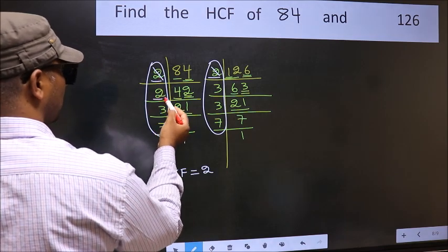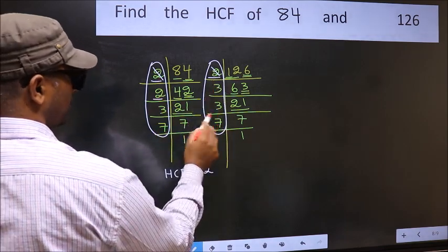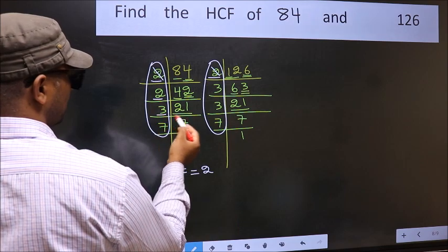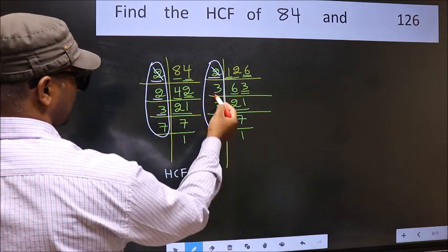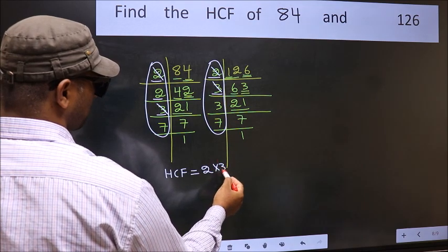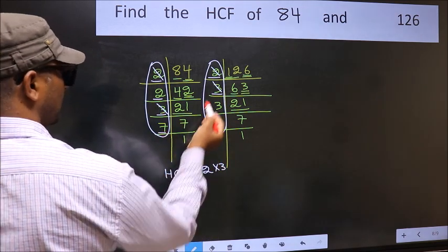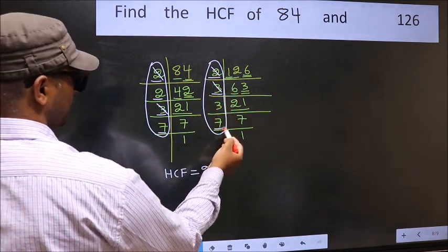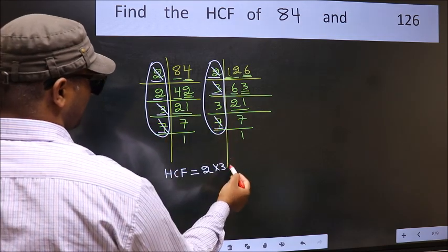So cut 2 right here. Next number 2. Do we have 2 here? No. Next number 3. Do we have 3 here? Yes. So cut 3 right here. Next number 7. Do we have 7 here? Yes. So cut 7 right here.